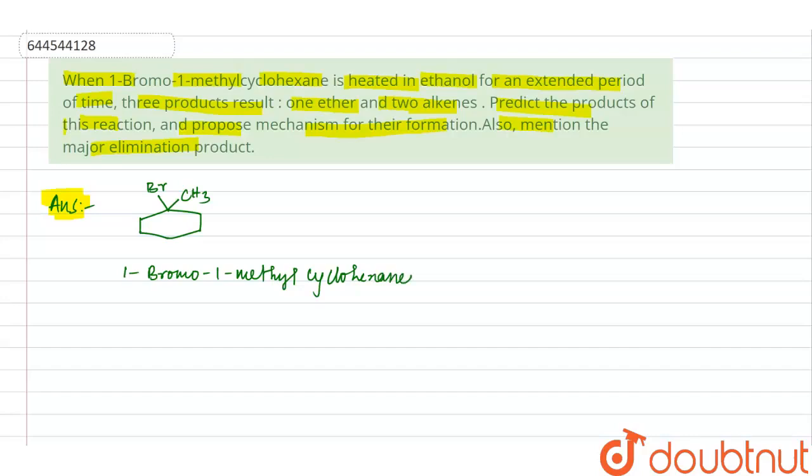Now here will be two types of reaction: SN1 and E2. First we are trying to make the SN1 reaction. In this stage the bromine will leave and we will get a carbocation.